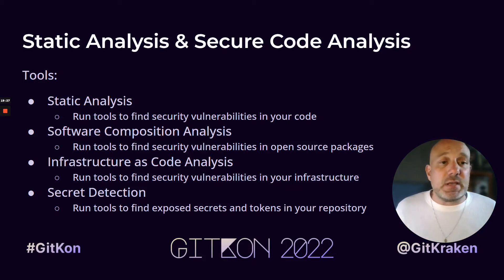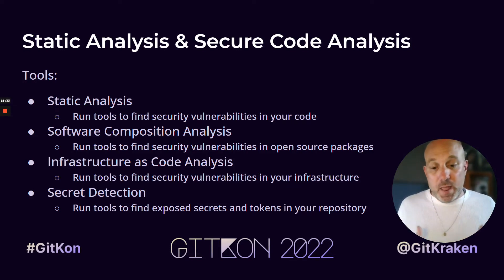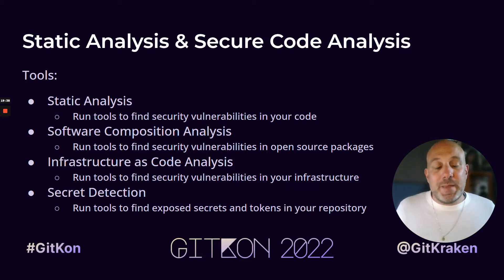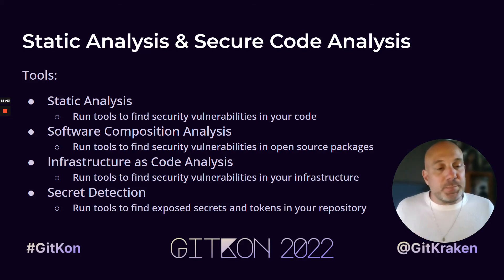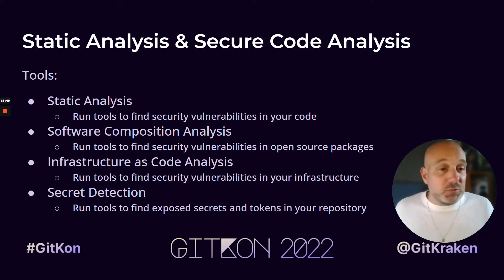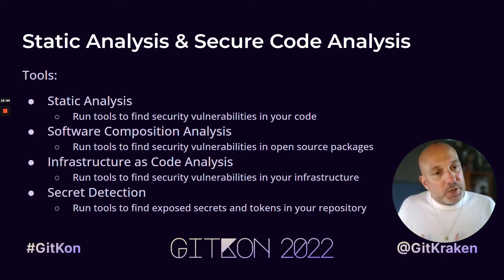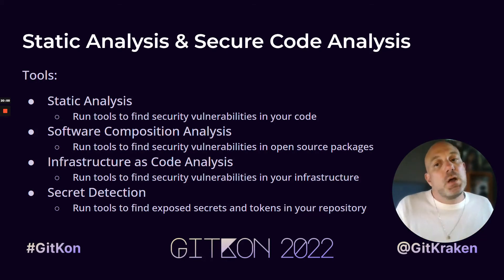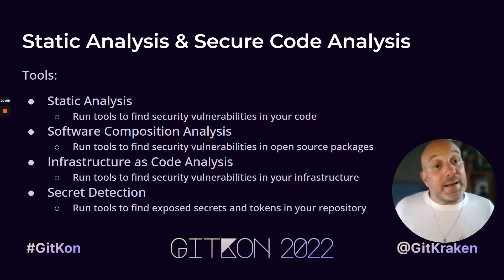Secret detection is crucial. What secrets or tokens are you leaking in your repo itself? Just because it's private doesn't mean it won't be public in the future. Someone in your organization might fork it, rewrite the code, make it public — and in the history there might be tokens in the commits. Secret detection tools can look at your Git history, go back in time, and make sure that not only the current version but also previous commits are not exposing any secrets or tokens.